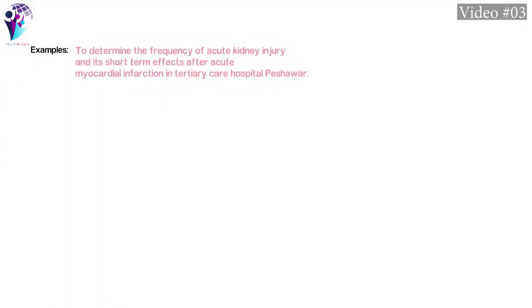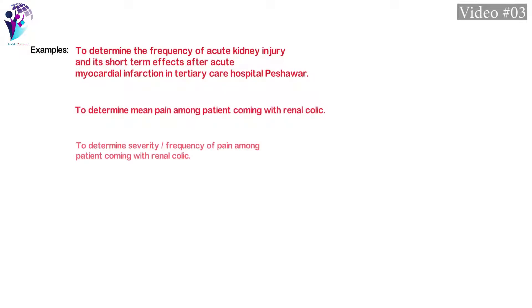Some examples of research objectives are: to determine the frequency of acute kidney injury and its short-term effects after acute myocardial infarction in a tertiary care hospital in Peshawar; to determine mean pain among patients coming with renal colic; and to determine severity of pain among patients coming with renal colic.